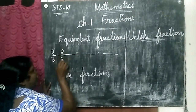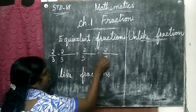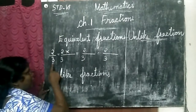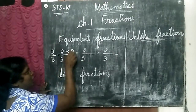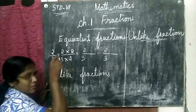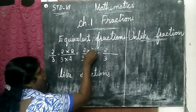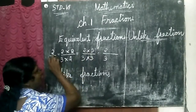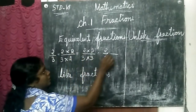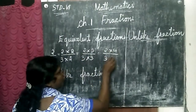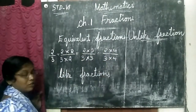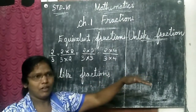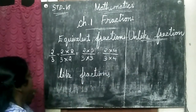Whatever the fraction is written here, you write it as it is. Then multiply numerator and denominator with the same number. Multiply with one — two ones are two, three ones are three. Next multiply with two, then with three, then with four. Like this we are multiplying with the tables.